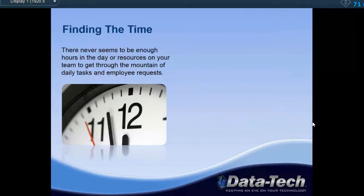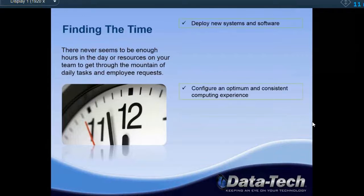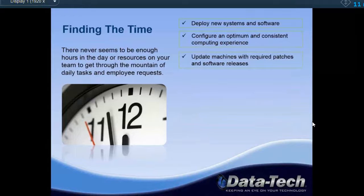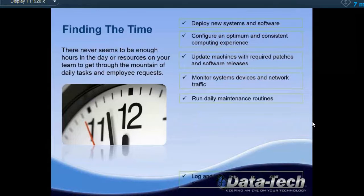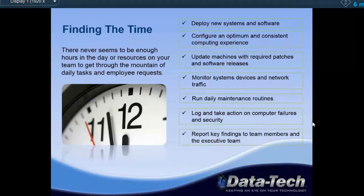The biggest issues we solve as an IT company is that there never seems to be enough time, especially if you're an IT administrator, to do all the things you need to do. An IT professional's list includes: deploying new systems and software, configuring and optimizing the computer experience, updating machines with patches, monitoring system devices and network traffic, running daily maintenance routines, logging and taking action on computer failures and security, reporting key findings to the executive team, and removing and updating antiquated system software. Most of this we are able to automate through the use of Kaseya.